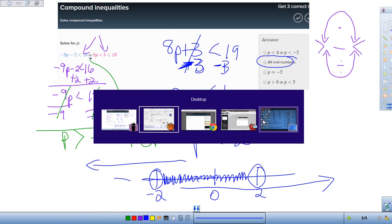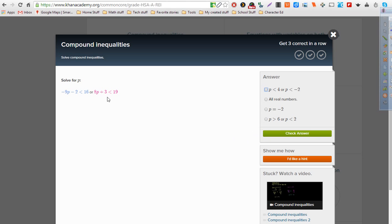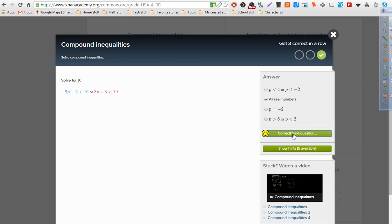So we would say this answer is all real numbers. It's all real numbers. Any number on the answer line, we could plug in. And either this one would be true or the other would be true. And in some cases, both. But since it's an or statement, we only need one to be true.